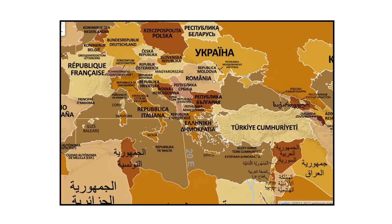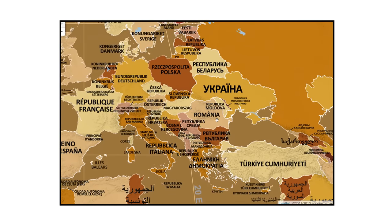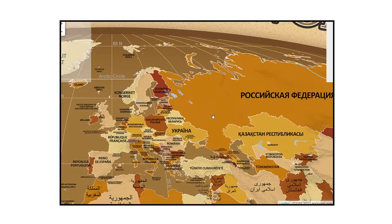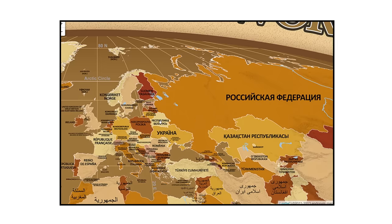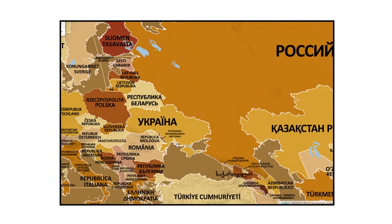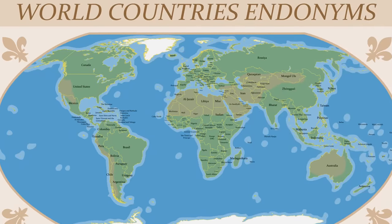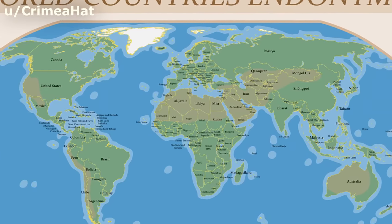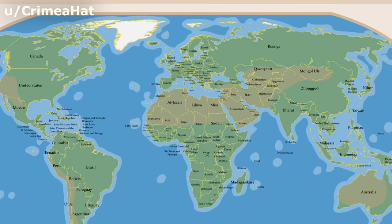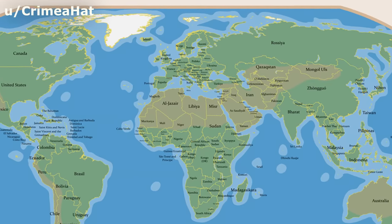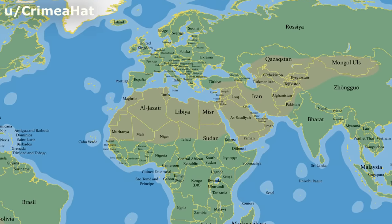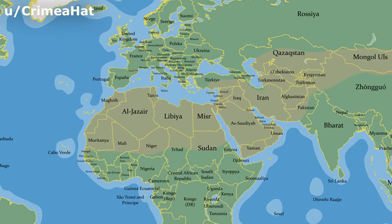There are also other examples of languages used in more than one country's endonym, such as Romanian, used by Romania and Moldova, and Russian, used by Russia, Belarus, and Transnistria. But this map is in the native languages, in most cases becoming un-understandable when you don't know every language in the world. So in addition, I found another map made by Reddit user CrimeaHat, which takes countries' endonyms and then directly translates them into English. This is a good exercise because it allows us to understand that exonyms — the names we call countries — aren't always just a direct translation of their endonyms.